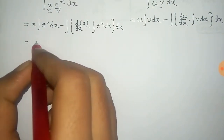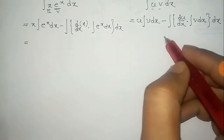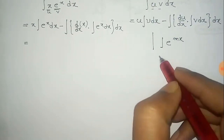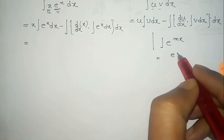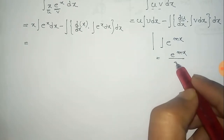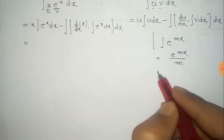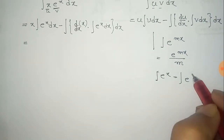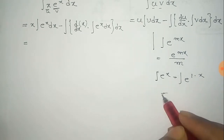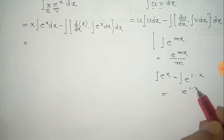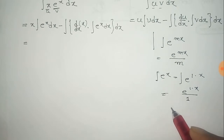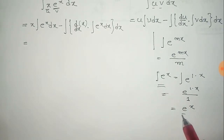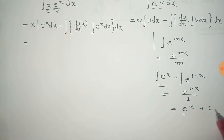For this we know that the integral of e to the power mx is e to the power mx divided by m, where m is a constant. Now for m equal to 1, e to the power x equals e to the power 1 times x, so the integral is e to the power x divided by 1, which equals e to the power x. Thus the integral of e to the power x is e to the power x plus a constant.